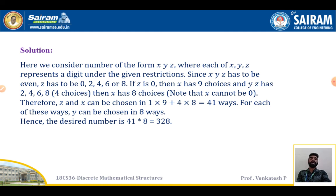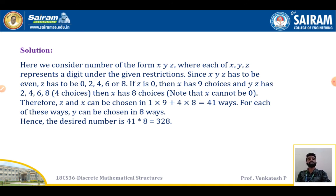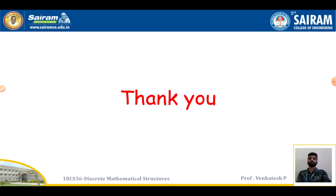If Z is 0, then X has 9 choices. If Z is 2, 4, 6, or 8 — that is 4 choices — then X has 8 choices since X cannot be 0. So Z and X can be chosen in 1 times 9 plus 4 times 8, which equals 41 ways. For each of these ways, Y can be chosen in 8 ways. Hence the desired number of three-digit even numbers with no repeated digits is 41 times 8, which equals 328.